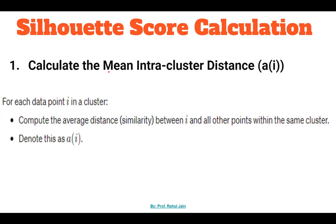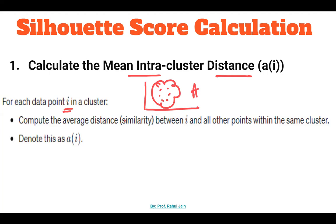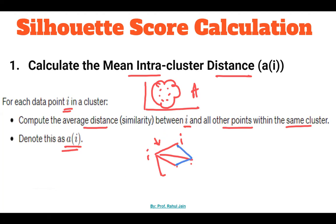First, we need to calculate the mean intra-cluster distance. For each data point i in a cluster — let's say cluster A — we calculate the average distance between i and all other points within the same cluster. We denote this as a(i). For example, we calculate the distance between each pair of data points within the cluster and then find the average distance between every data point and all other data points in the same cluster.